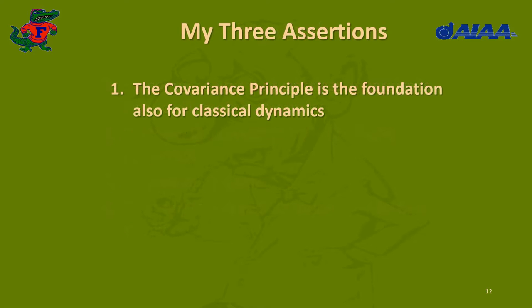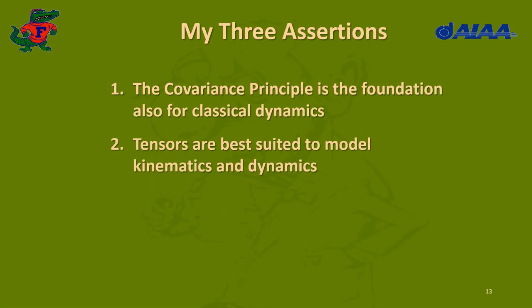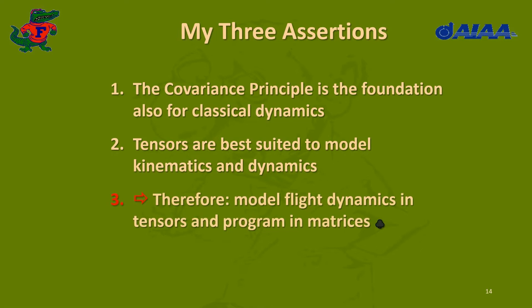Here are my three assumptions. The covariance principle is the foundation also for classical dynamics, because it is universally valid. Just as Einstein used tensors, tensors are best suited to model kinematics and dynamics. And because of that, flight dynamics is modeled in tensors. The tensors are converted to matrices by introducing coordinate systems, and then we can use these wonderful programs we have to manipulate and solve matrix equations.